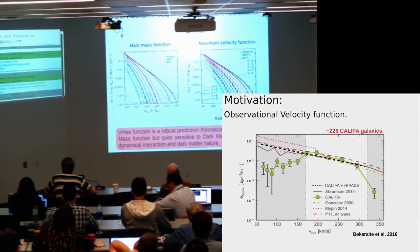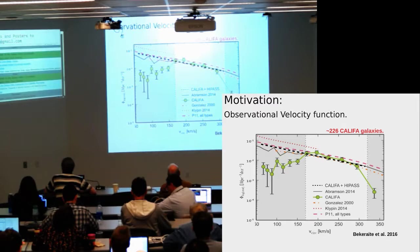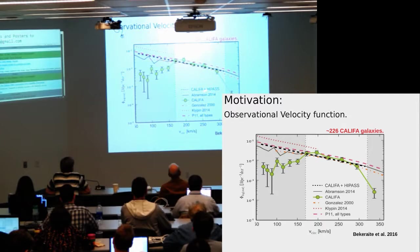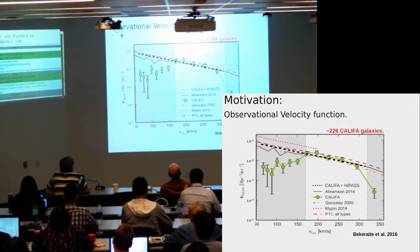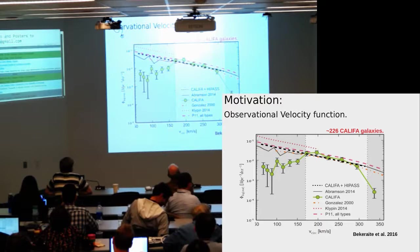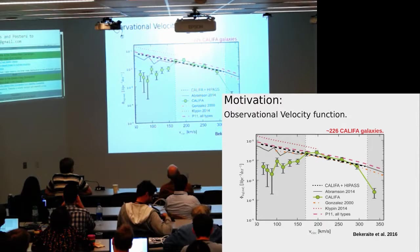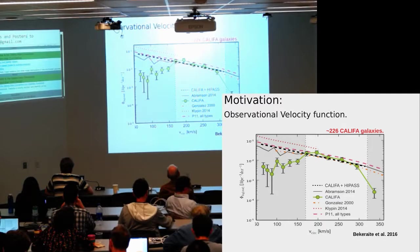There are several works using observational data to explore the velocity function. One example is Bekki 2016 using 226 CALIFA galaxies. The results are shown in green symbols. The white region is where the CALIFA sample is complete. They also compare with H1 HIPASS, shown by the black dashed line, and with other observational works — for example, Papastaris 2011 using the H1 ALFALFA survey represented by the dashed red line, and also the 2dFRS sky redshift survey that used the luminosity function and the Tully-Fisher relation to build the velocity function, represented by the orange line.